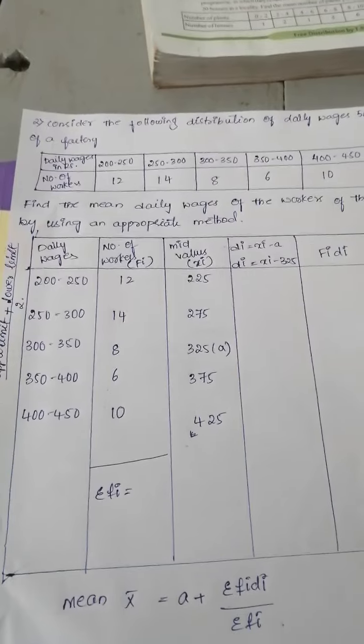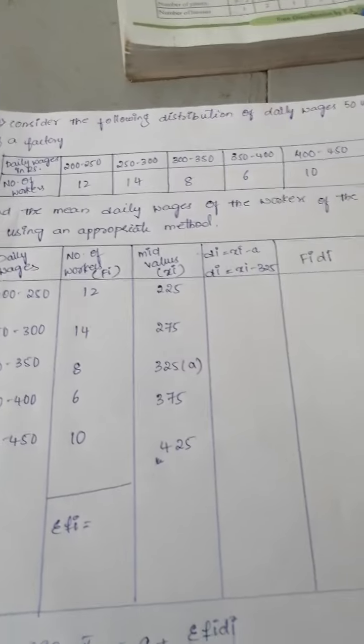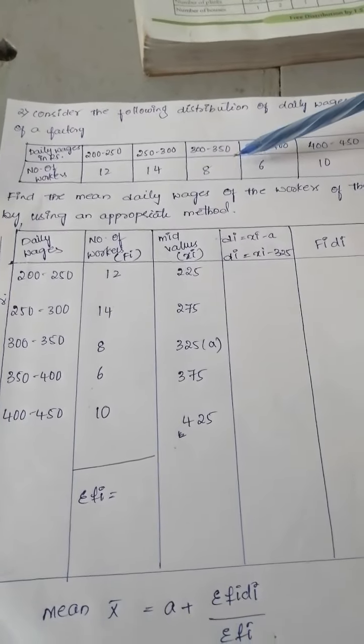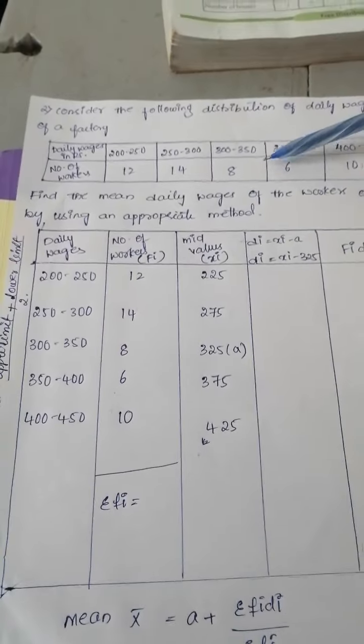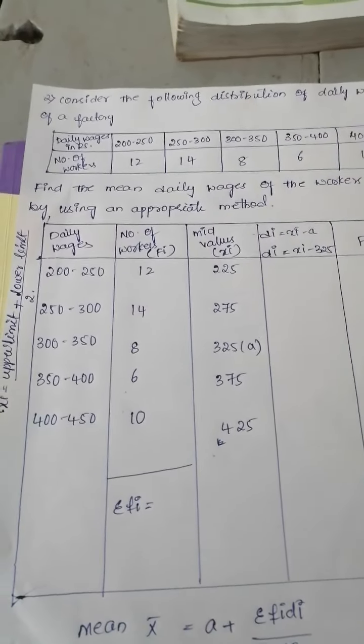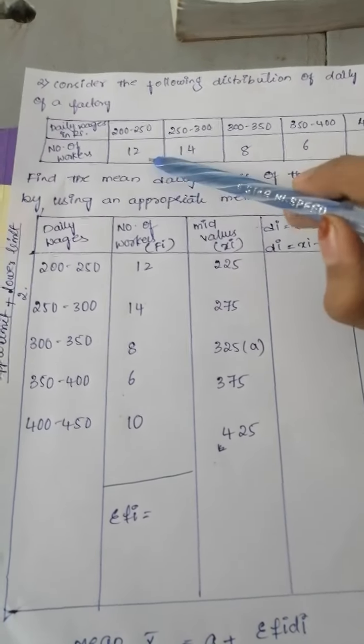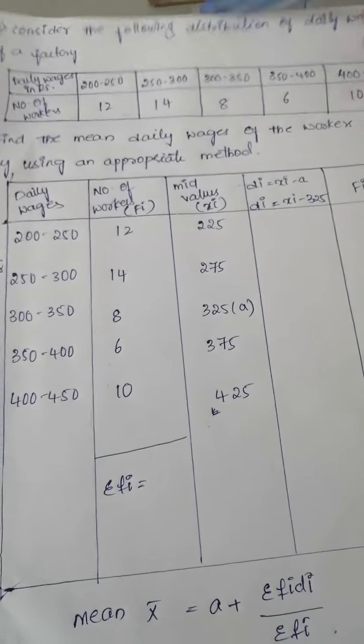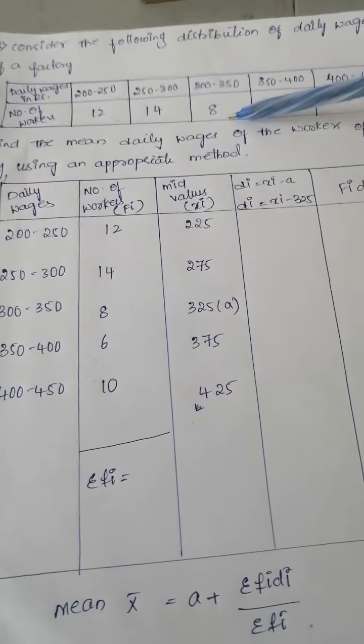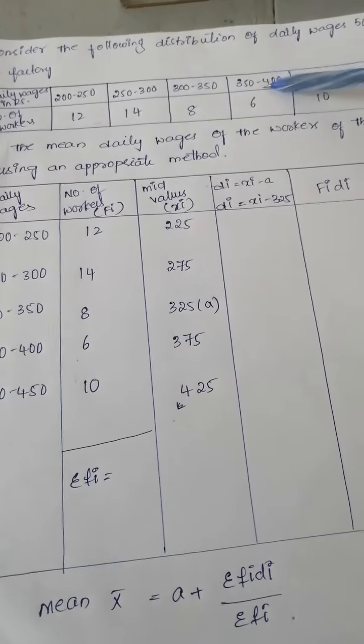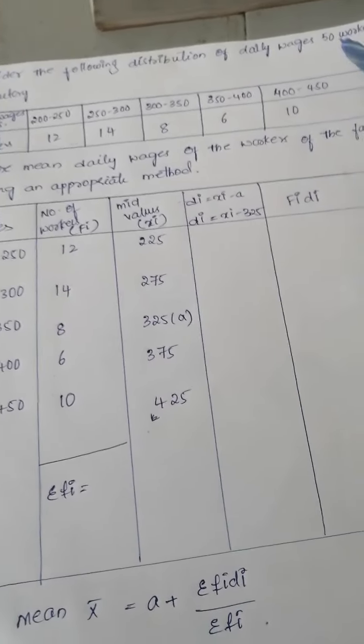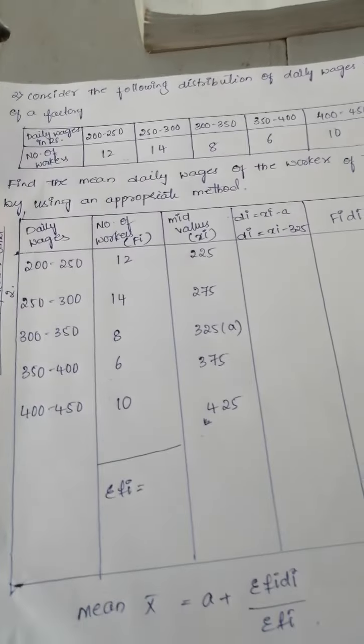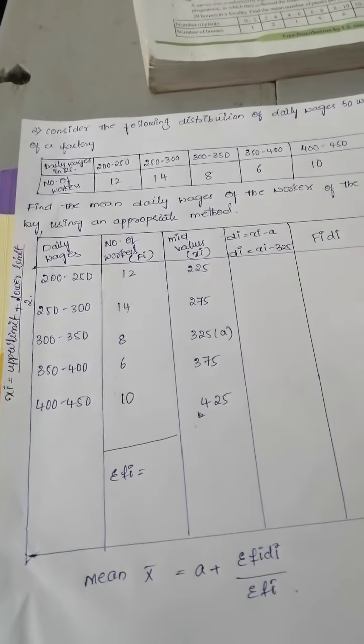Today we are going to discuss question number 2. Consider the following distribution of daily wages of 50 workers of a factory. Here we have 50 workers which work in the factory. Find the mean daily wages of the workers of the factory by using the appropriate method.